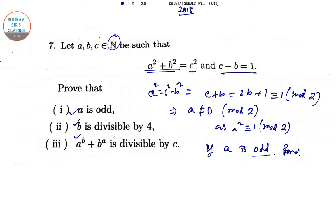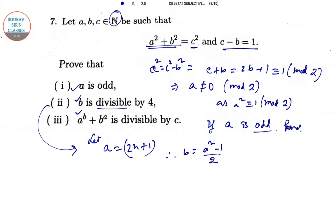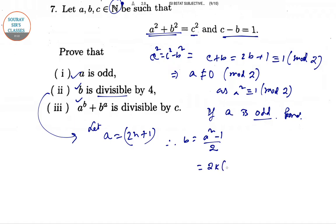Second part is we take divisibility. We take that A is odd as we have already known. So let A equal 2N plus 1. So obviously B equals A squared minus 1 divided by 2. So we can write 2K into N plus 1.